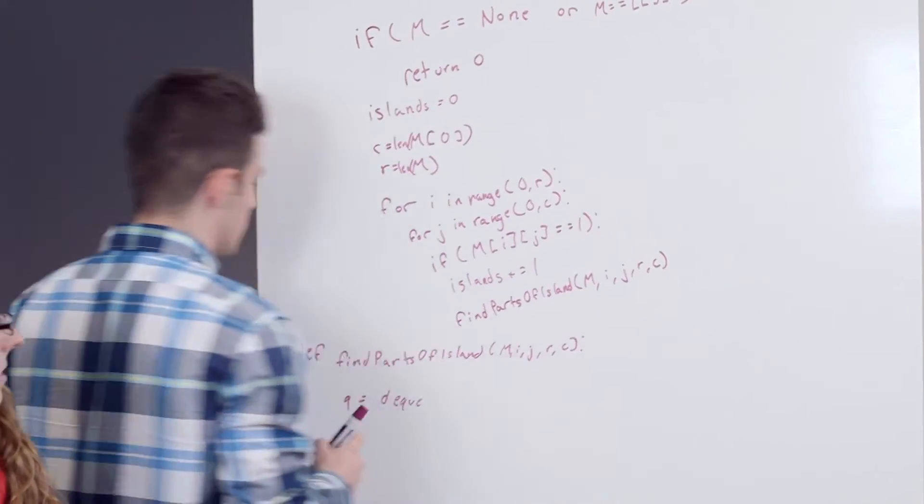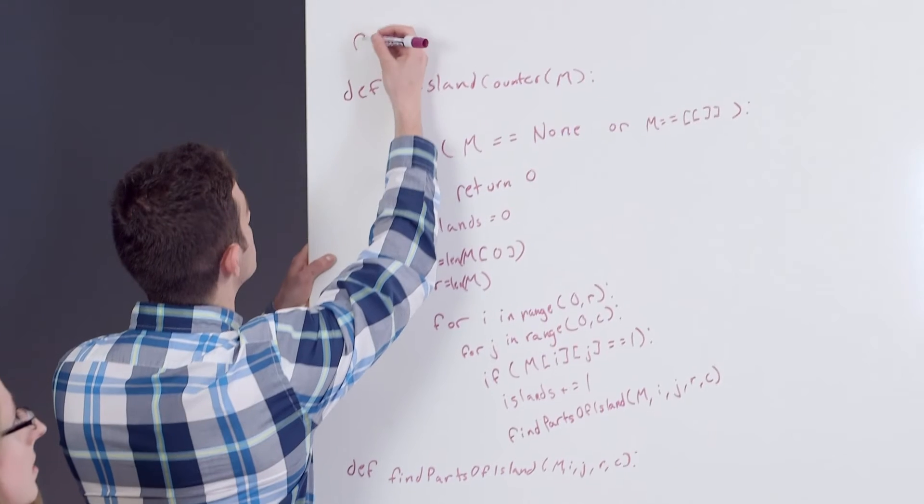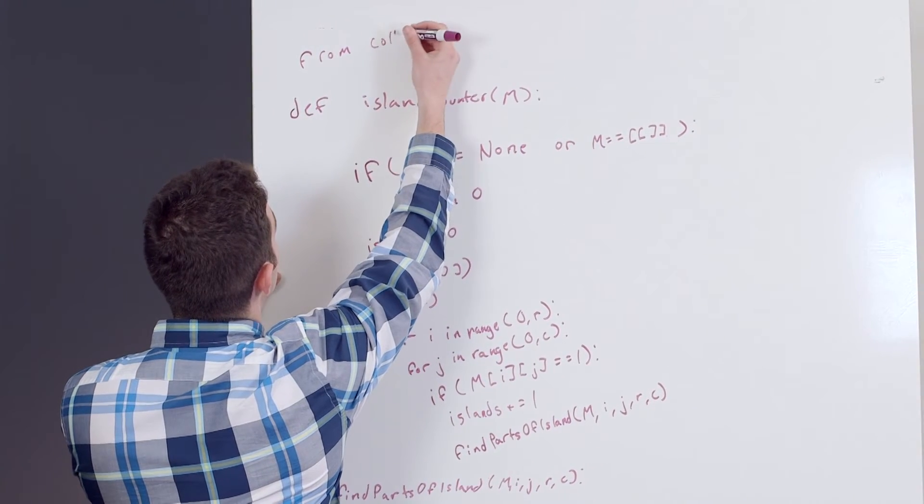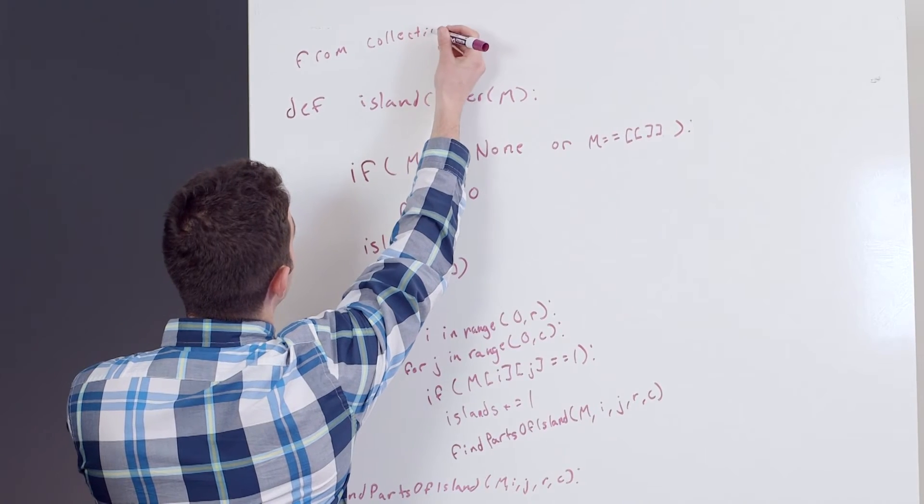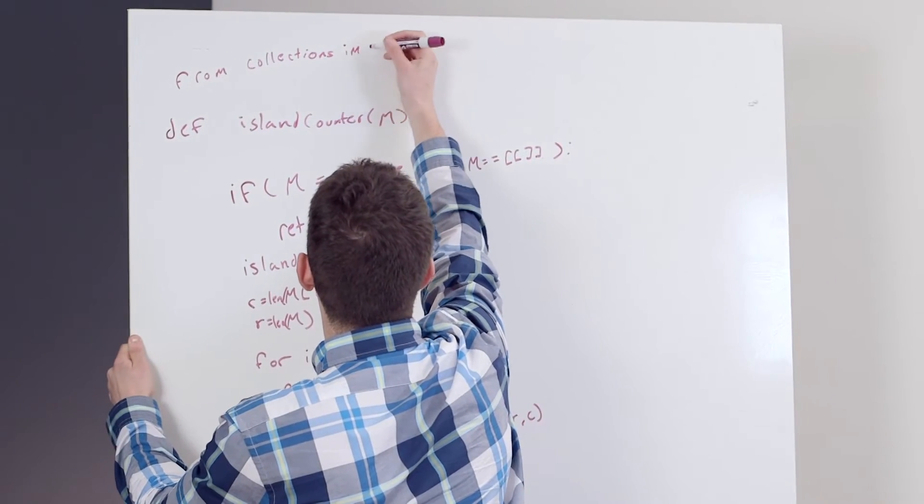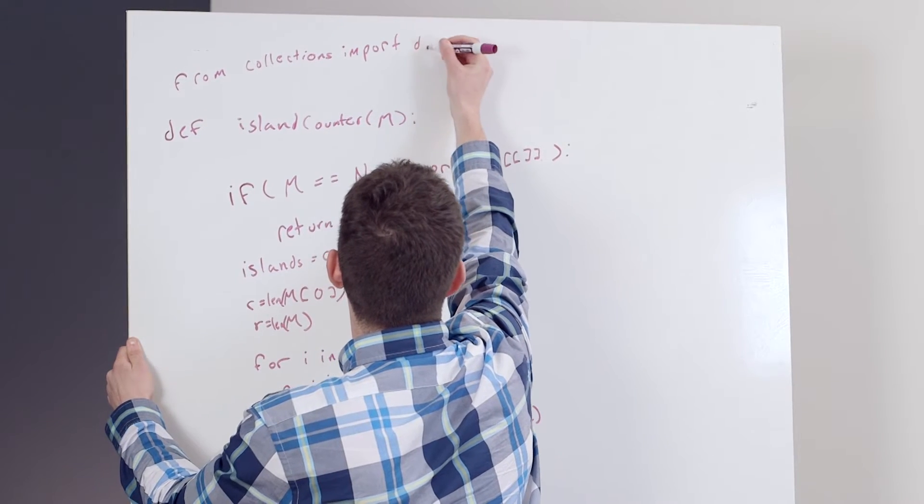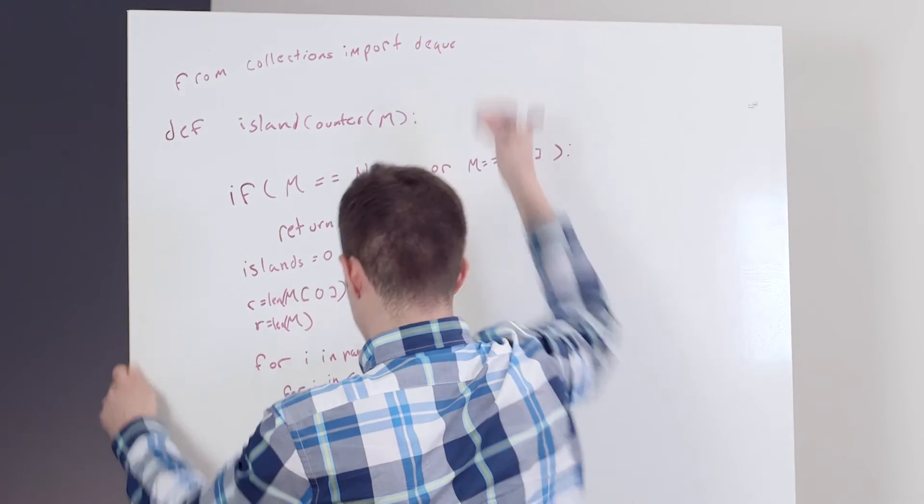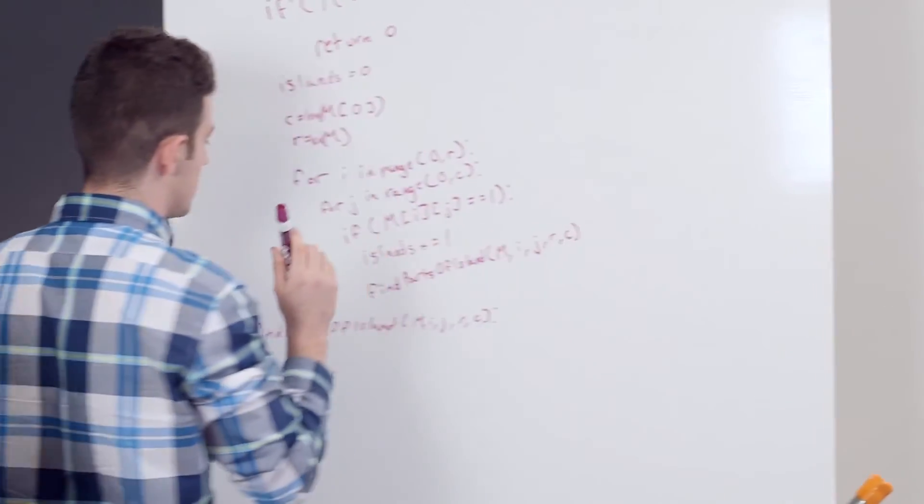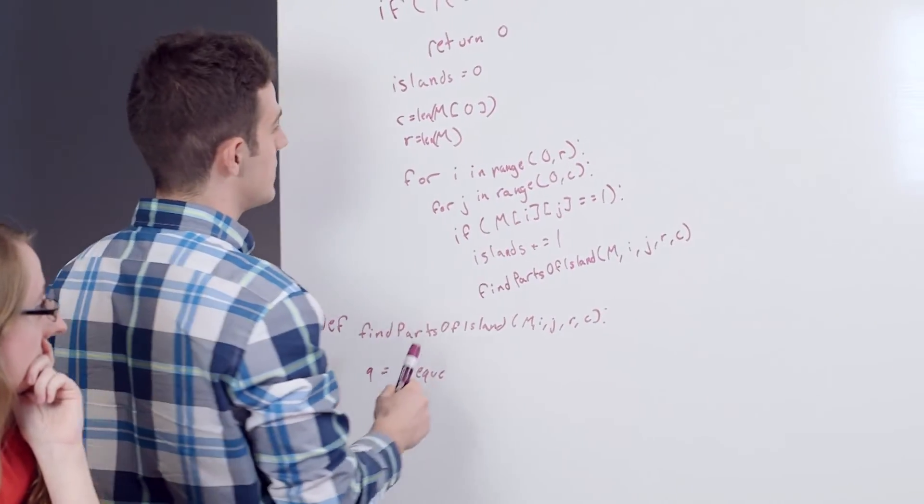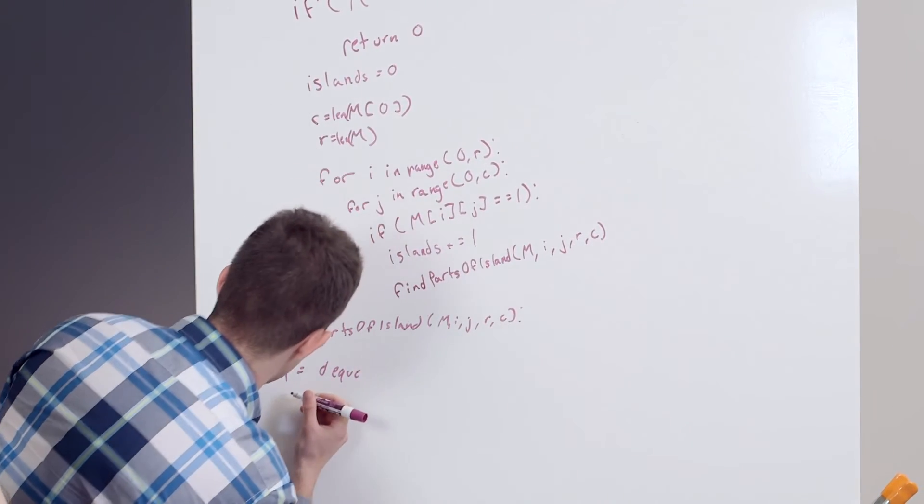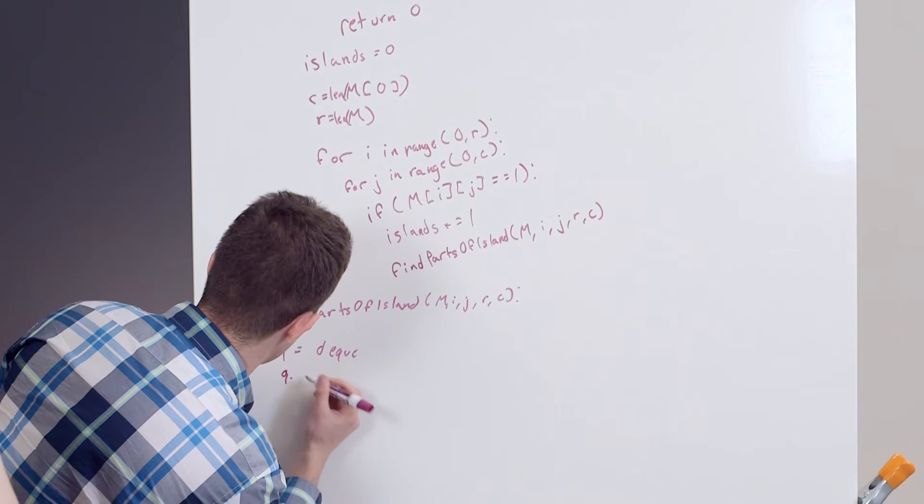And I actually need to import this method here, and this is from the collections framework. And then the first thing I'm going to do is I'm going to append my indexes here so I know the location. So I'm going to append these to my queue.